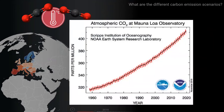This is a particularly famous plot showing carbon dioxide levels recorded on a regular basis since the 1950s in Hawaii, which shows today's levels of concentration at around 410 parts per million.